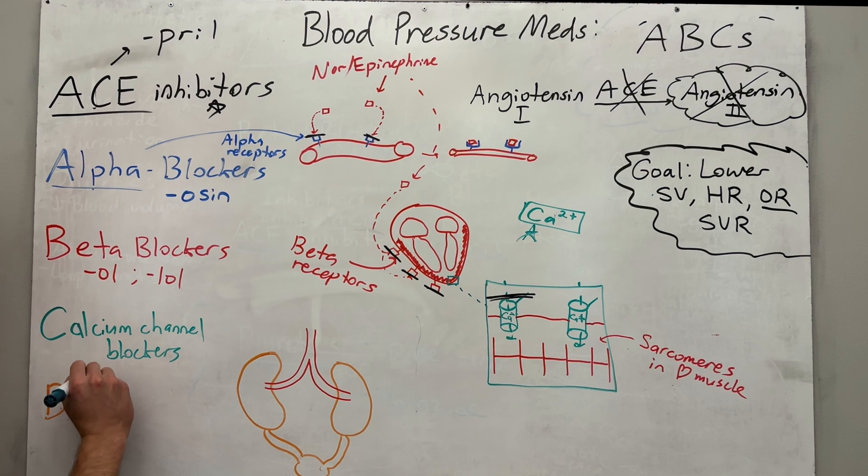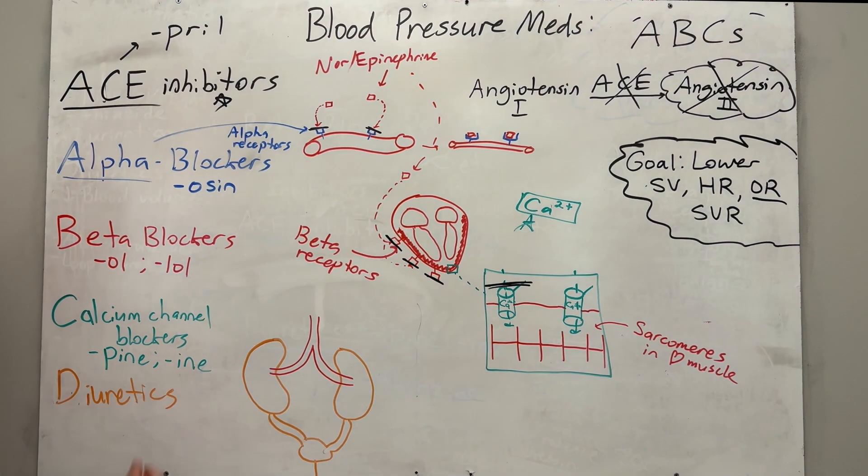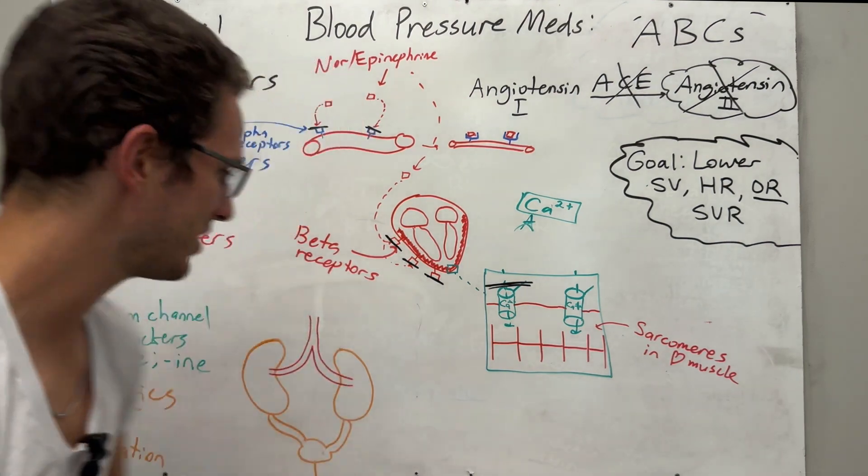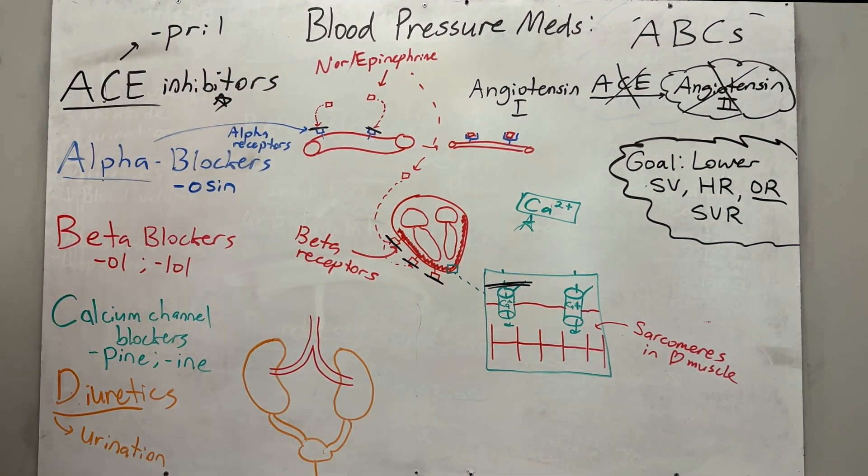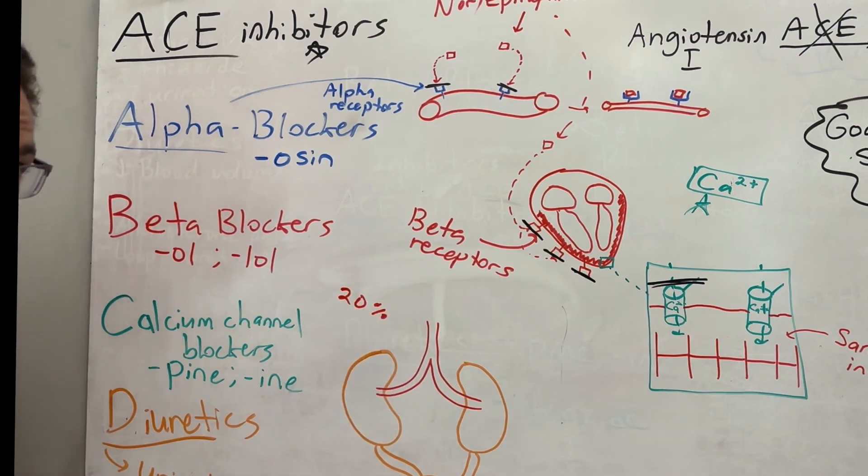Calcium channel blockers. These guys usually end in heen or just ene. All right. So I believe diazepine is one of them. All right. Last one. Hopefully this is helpful. Last one, D, these stand for diuretics. Diuretics. To diurese means to urinate. Okay. So this is going to cause urination. Now you may ask the question, why the heck does urination cause lower blood pressure?